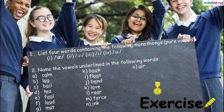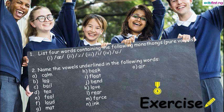Here's an exercise for you to do. First, list four words containing each of the following vowel sounds — four vowels have been listed, so list four words each containing those sounds. Number two, name the vowels underlined in the following words — you have a list from A to O. Very simple. I wish you the best of luck. See you in the next class.